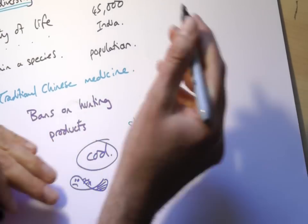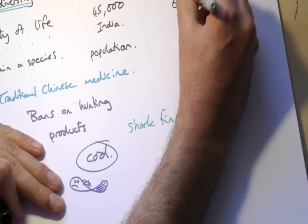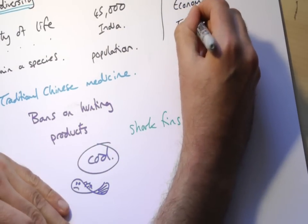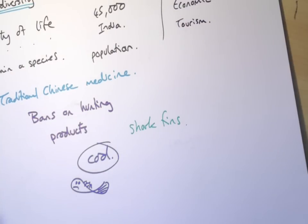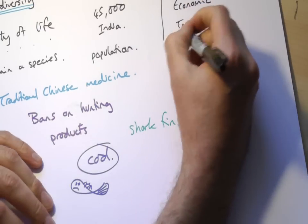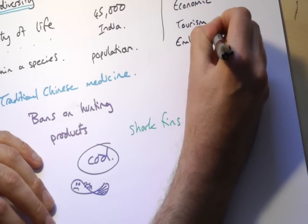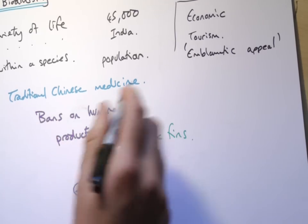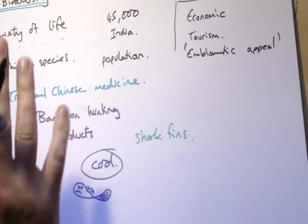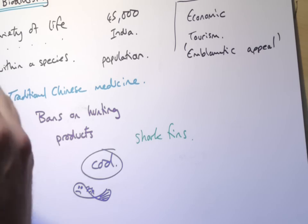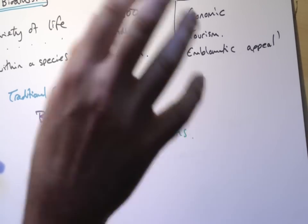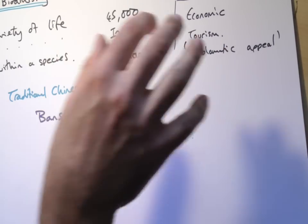What's the value of these animals? Well, a couple of ways you can look at this. You can look at the economic value — how much value you get in terms of money. For example, tourism: a lot of people would visit these areas to see tigers. They also have an emblematic appeal. Think of something like a panda, which is a very endangered species, but people associate China with pandas, so it's a powerful tool for promotion. Pandas in zoos create a lot of interest and a huge amount of money, so there is an economic value behind that.